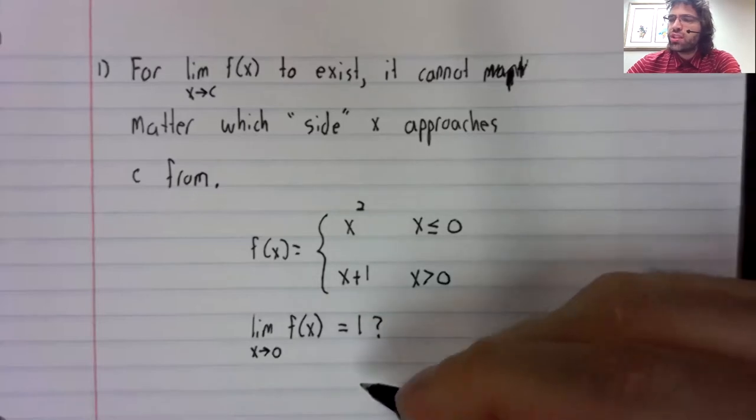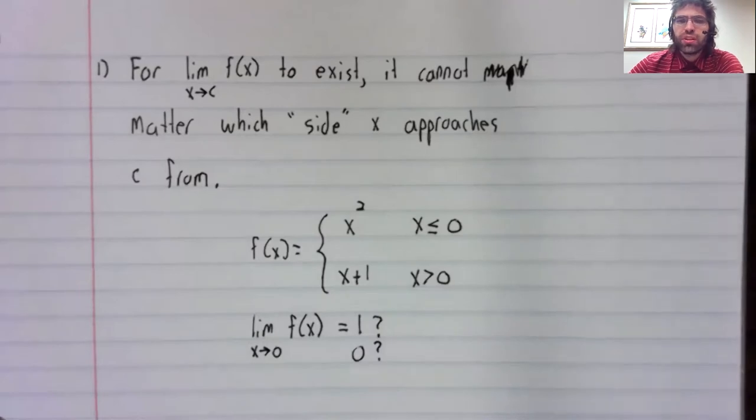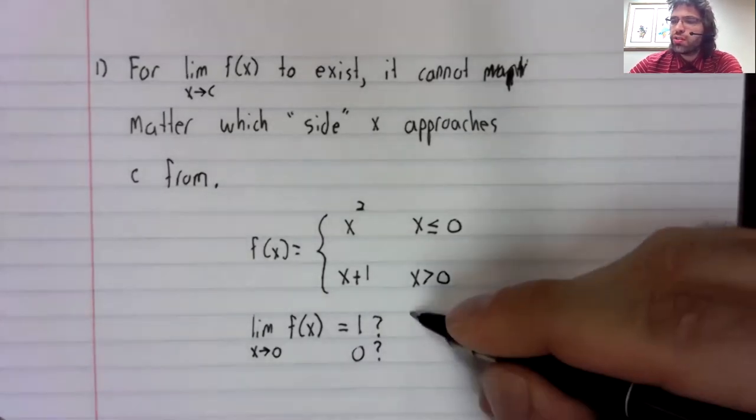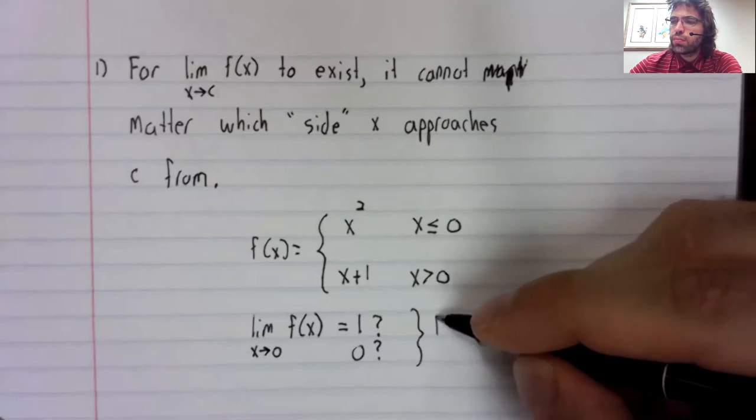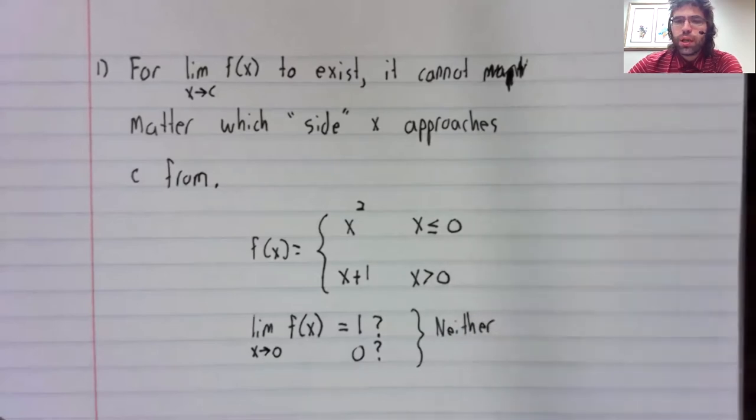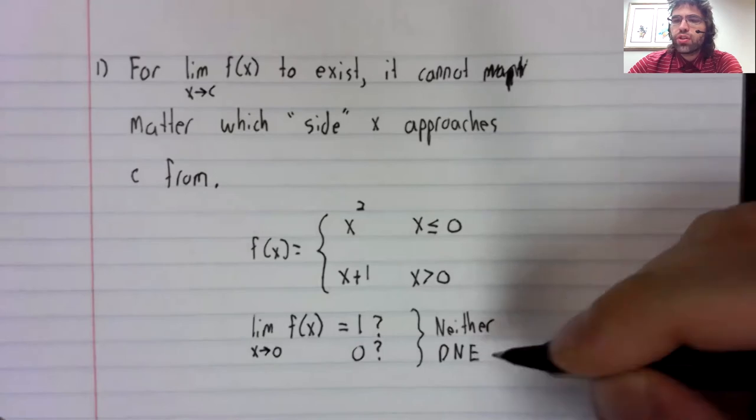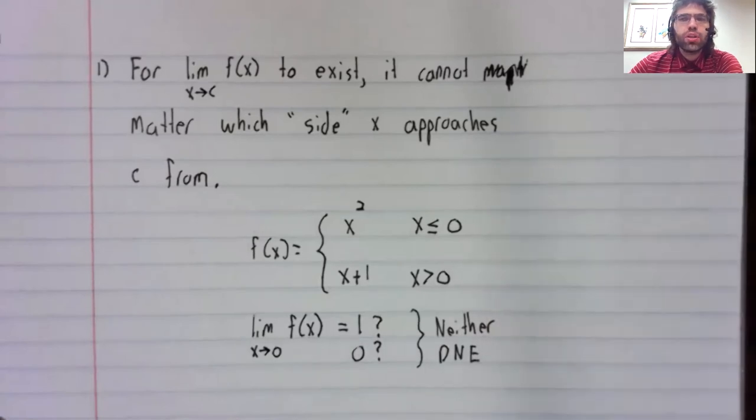So which is it? Is the limit approaching one, or is the limit approaching zero? Well, the answer is neither. In a situation like this, the limit simply doesn't exist.